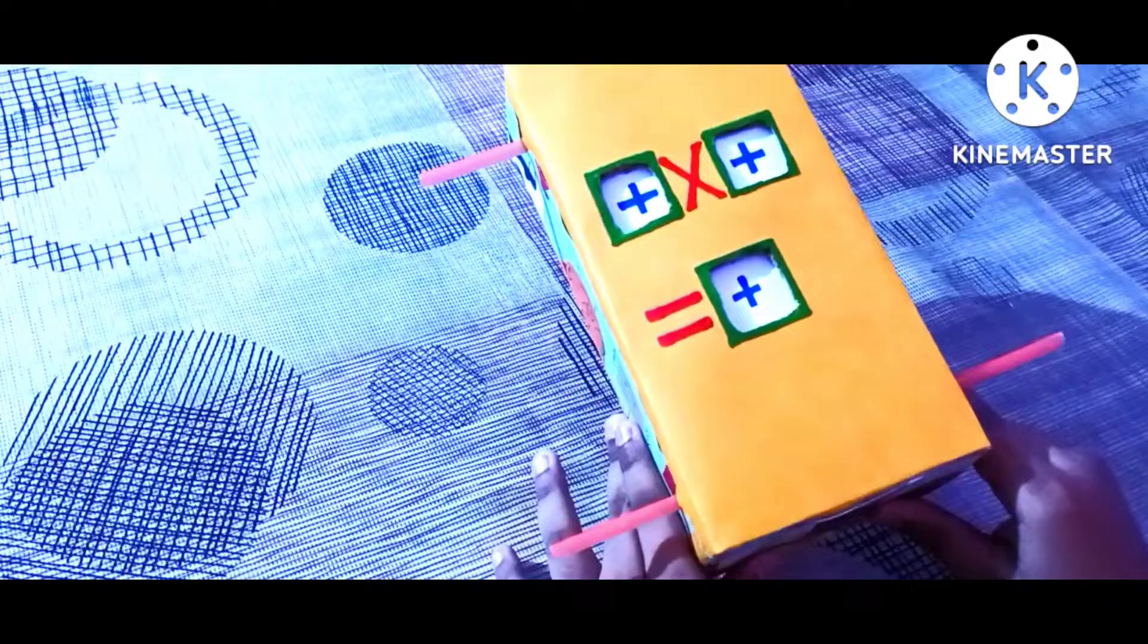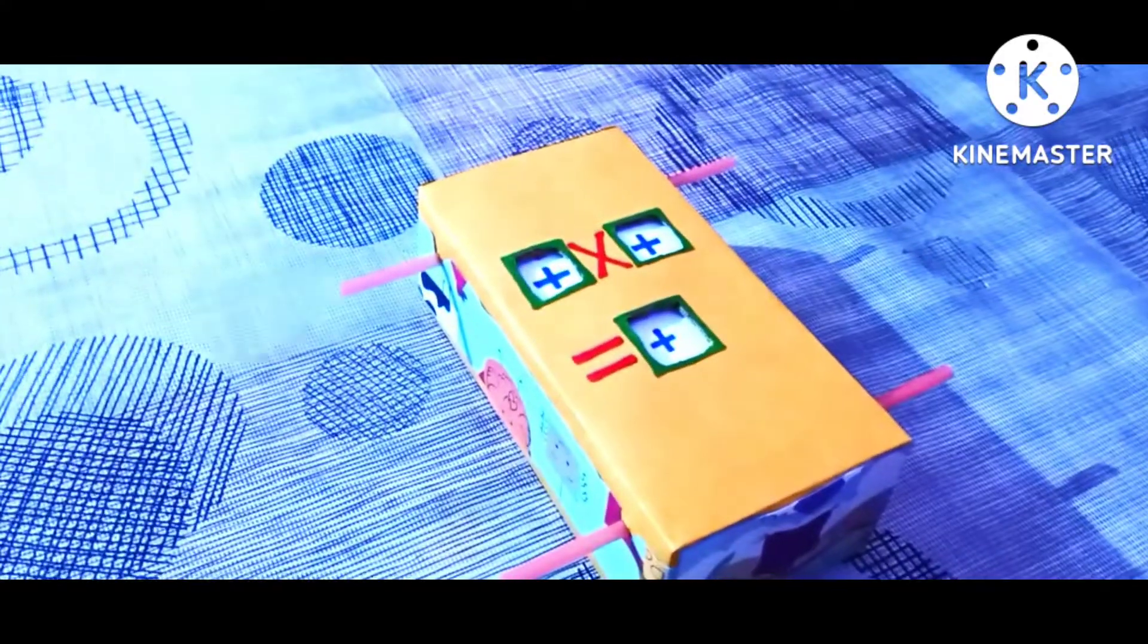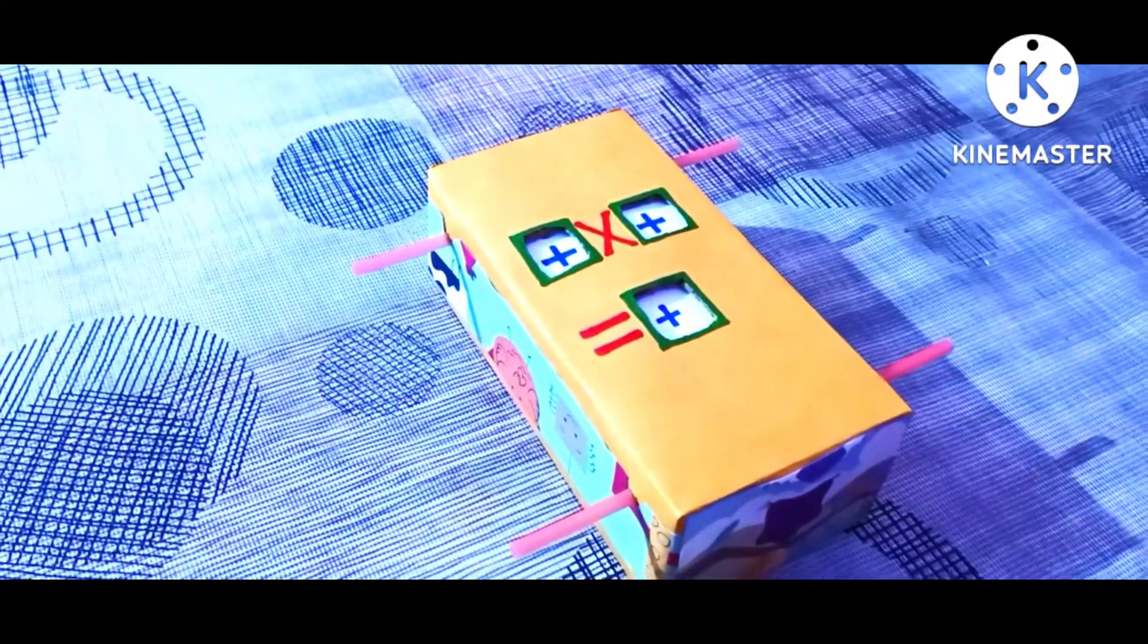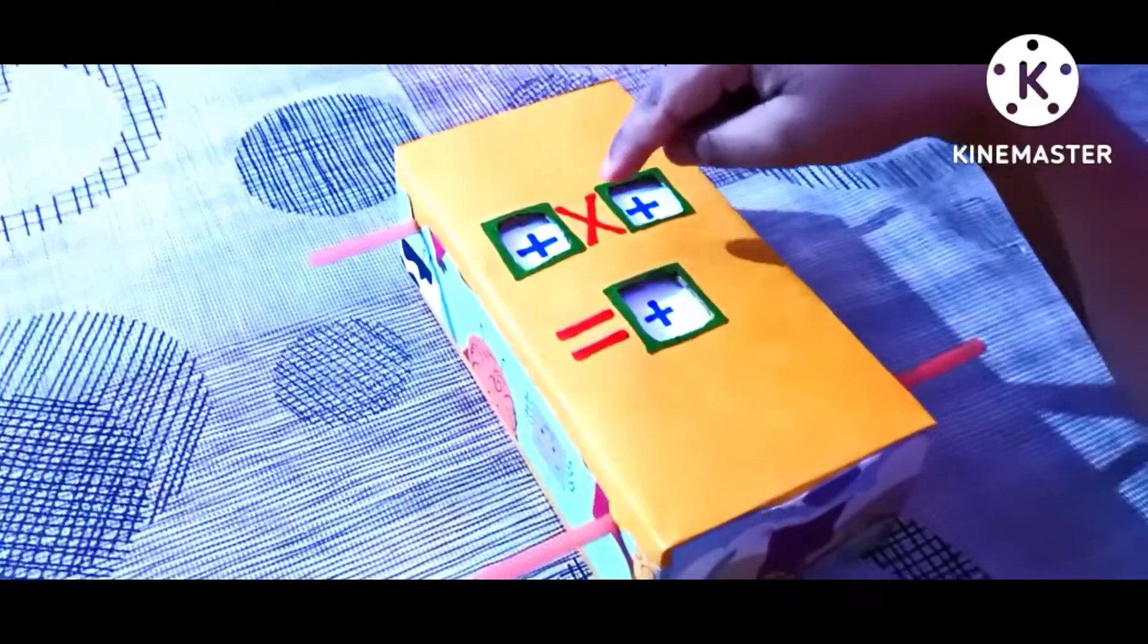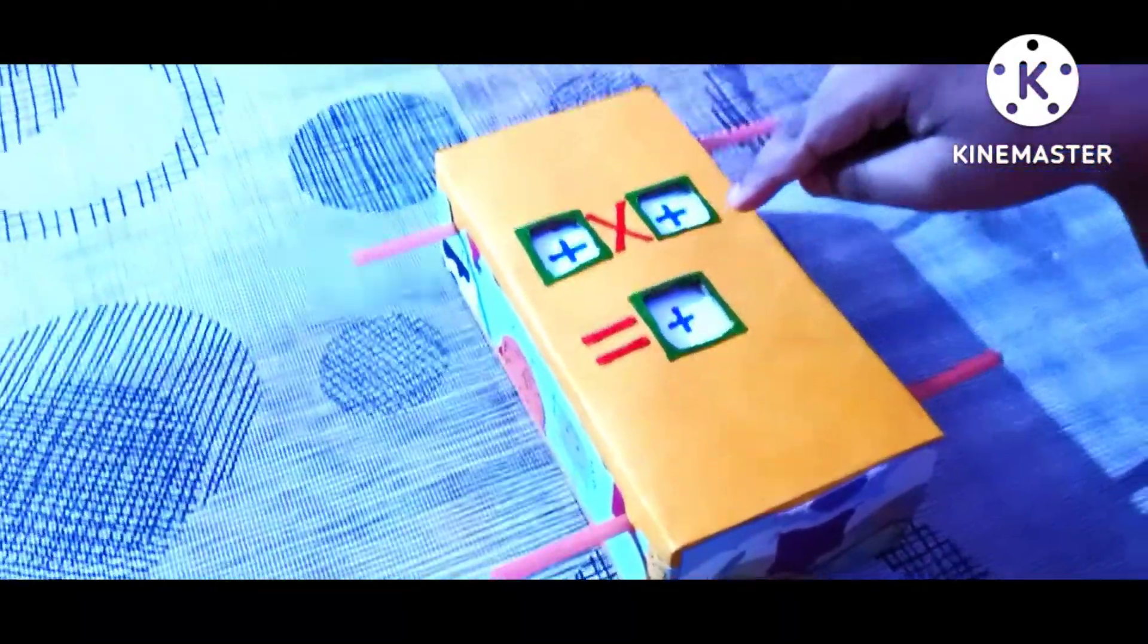After that, we will put colored paper in all of our box. And then, we will add some decorations. And we will make a symbol of into and is equal to on front of the box.